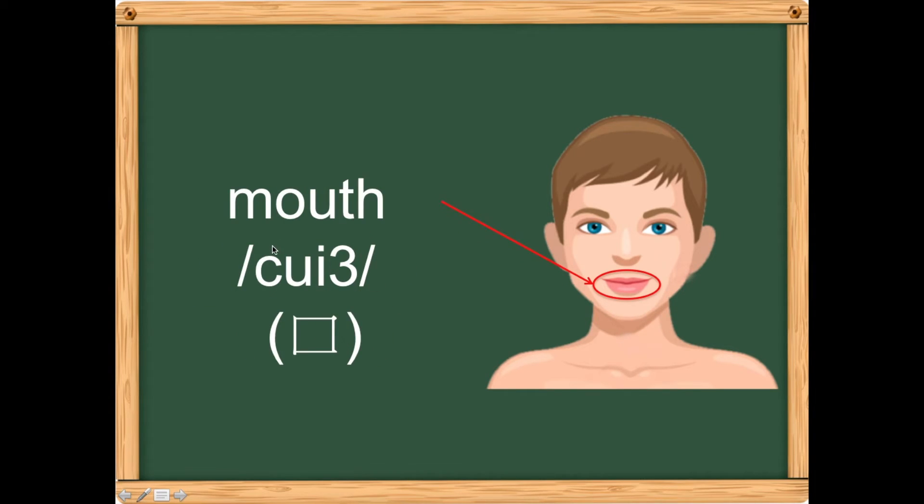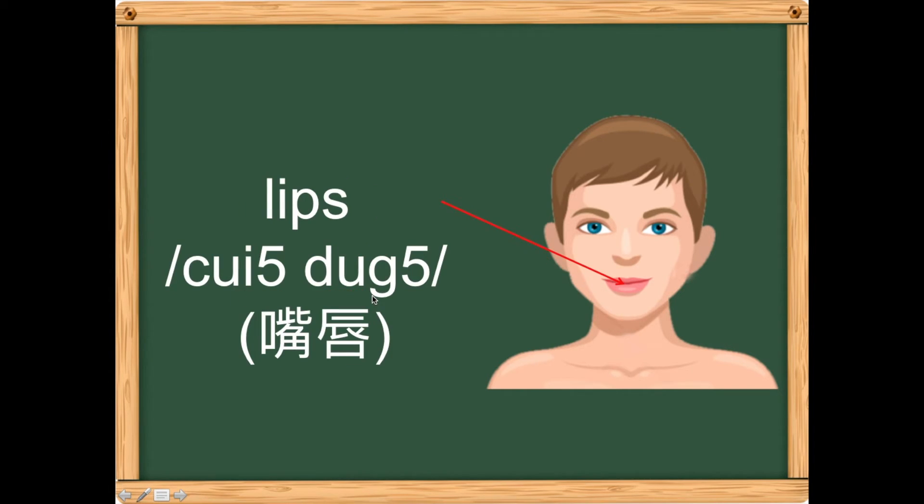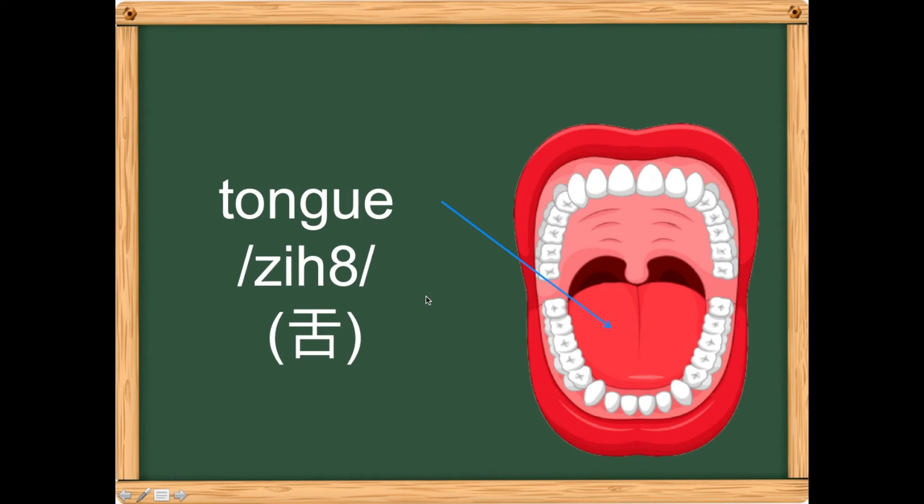The mouth is called 'ẻ hai.' Inside your mouth, your tongue is called 'chì.'